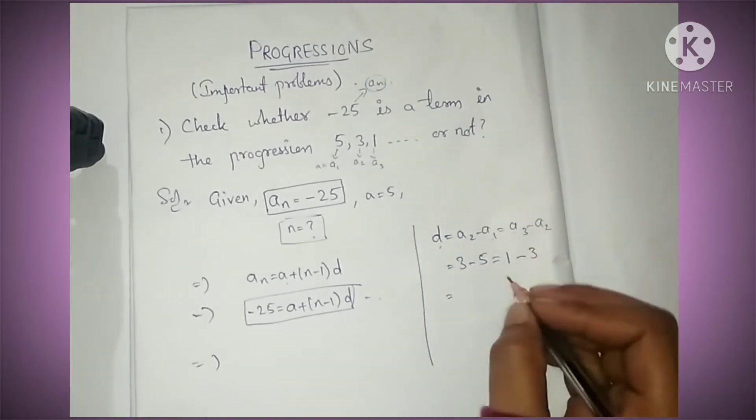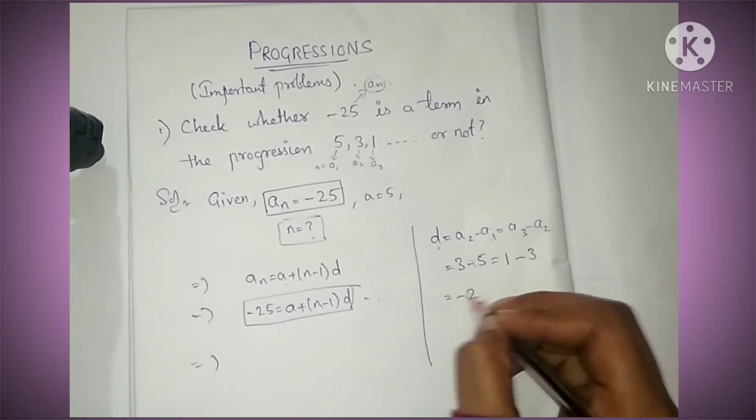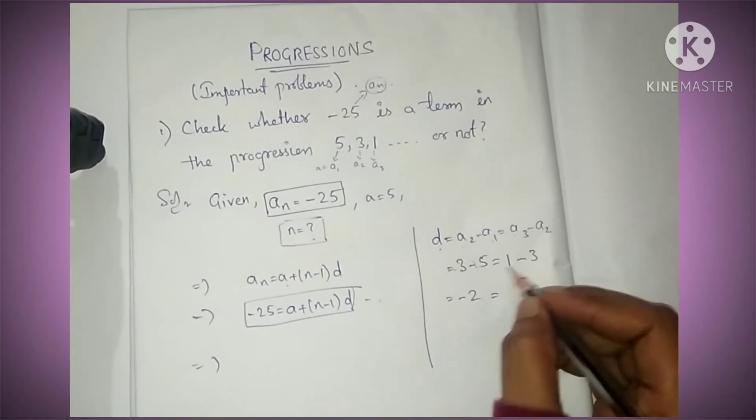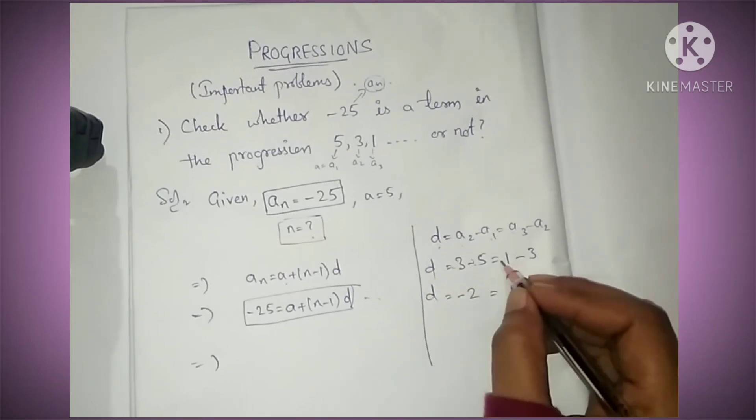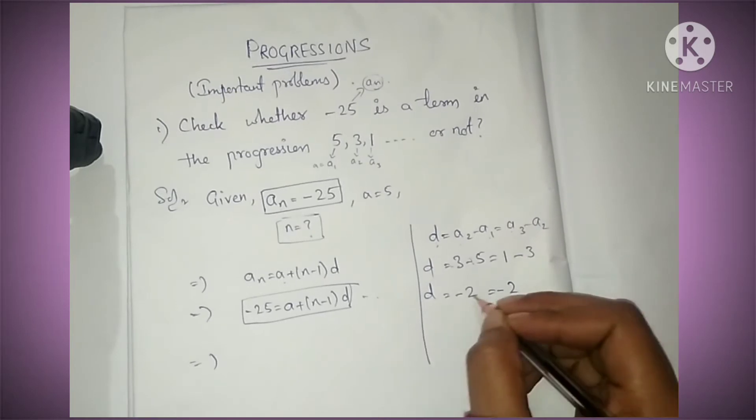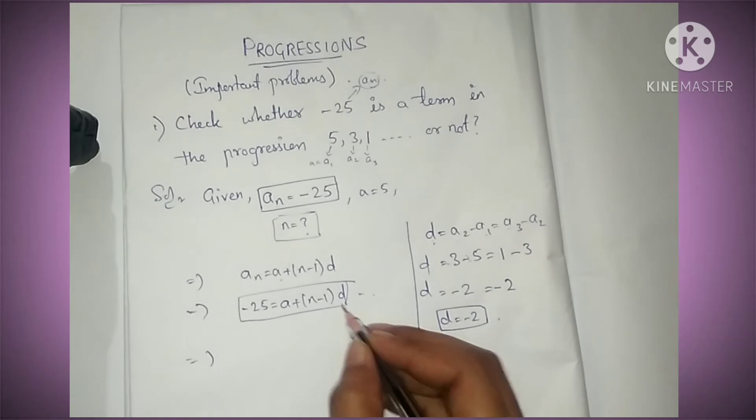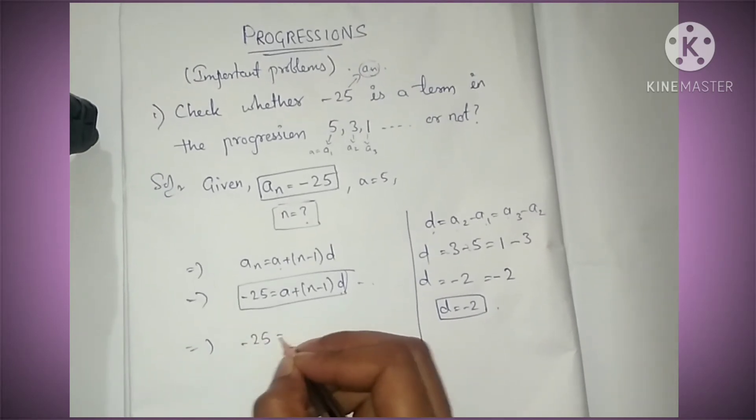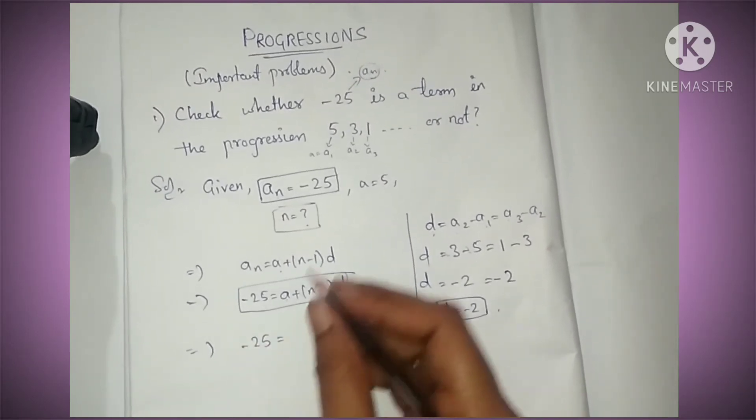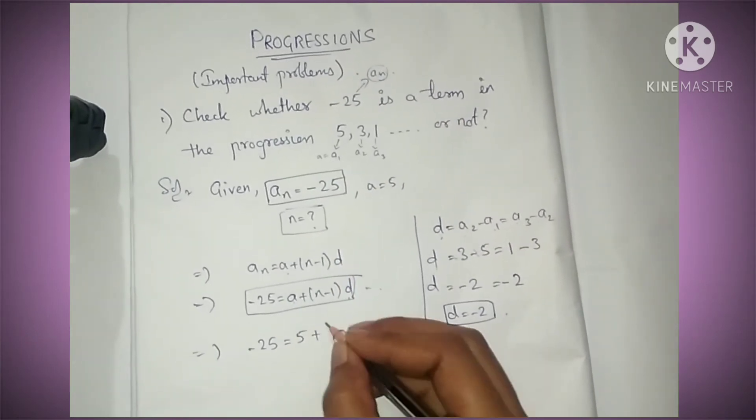So 5 - 3 = 2, the biggest number's sign is minus. And 3 - 1 = 2, so minus 2. The d value is -2. Now we can substitute: -25 = 5 + (n-1)(-2).